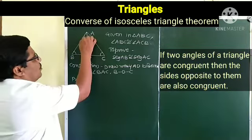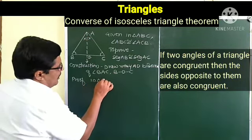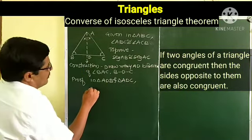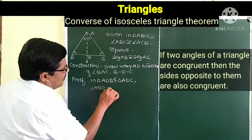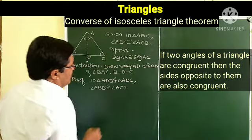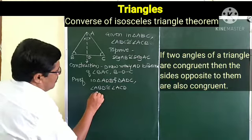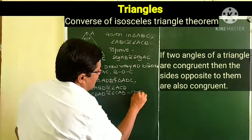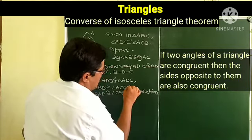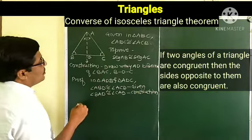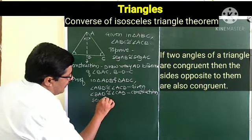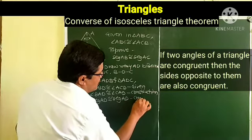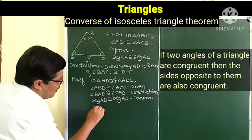In the proof, we show the two triangles are congruent. In triangle ADB and triangle ADC: angle ABD is congruent to angle ACD — this is given. Then angle BAD is congruent to angle CAD — this is by construction. The third element is segment AD congruent to segment AD — this is the common side.